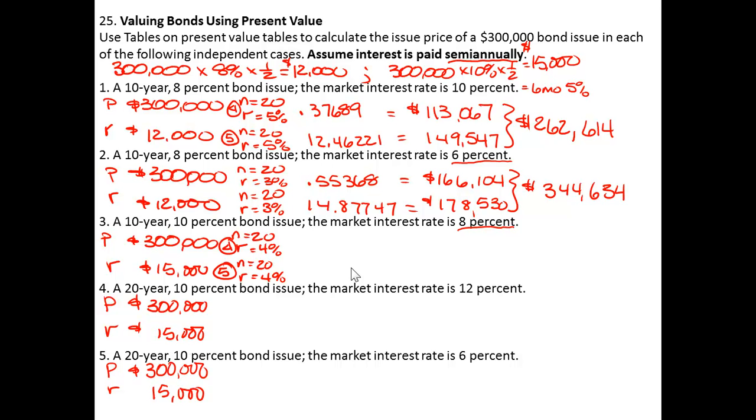Going to Table 4, I find a value of 0.45639 and going to Table 5, I find 13.59033. So $300,000 times 0.45639 gives us $136,917 is the present value of the bond and the present value of the interest, $15,000 times 13.59033 is $203,855.